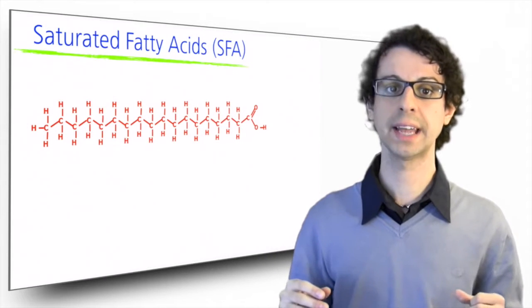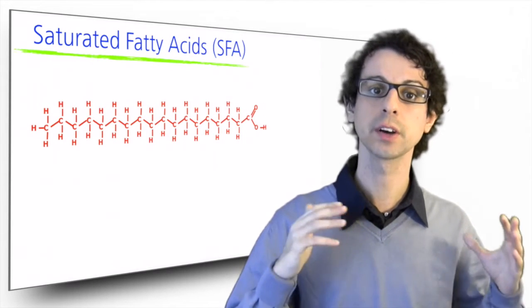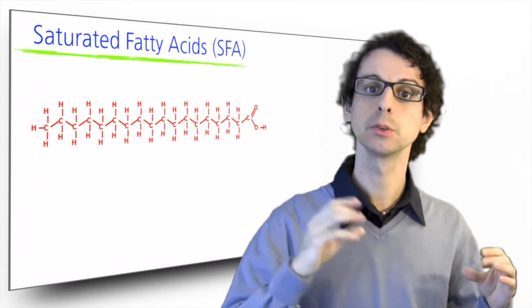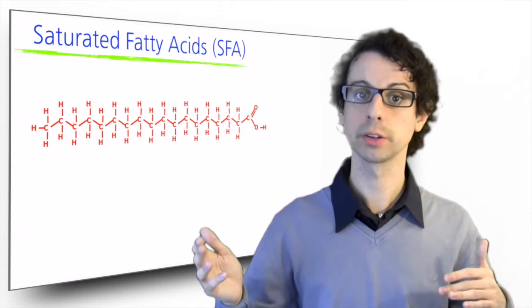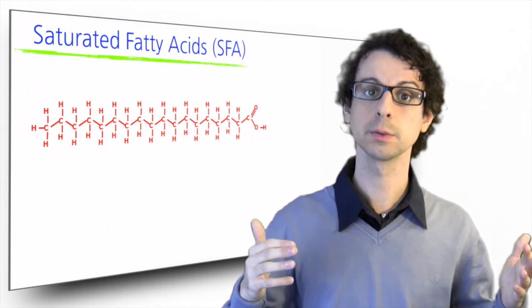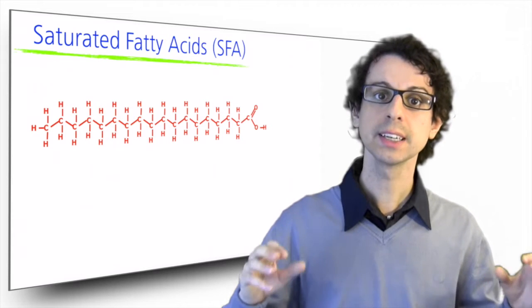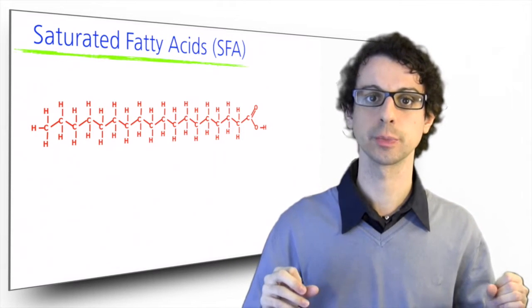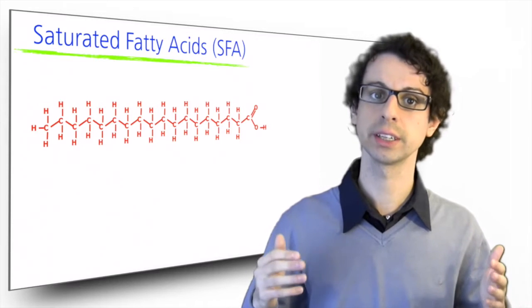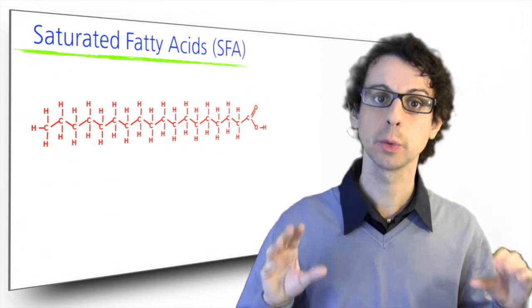This is how a saturated fatty acid looks like. As you can see, it is a long chain of atoms of carbon. Each carbon is bound to two other atoms of carbon along the chain, one on its left, one on its right, and then since carbon needs to make four bonds, the remaining two bonds are made with hydrogen. We say that this chain of atoms of carbon is saturated with atoms of hydrogen. This is why we call it saturated fatty acids, because all the remaining available bonds are filled with hydrogen.